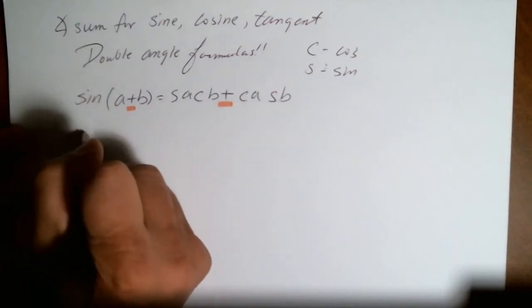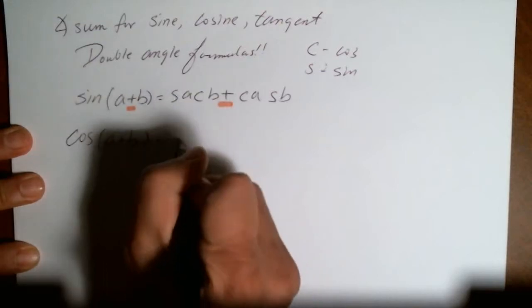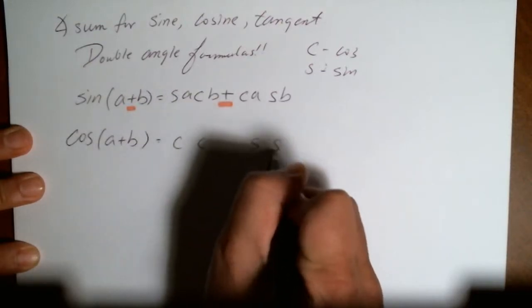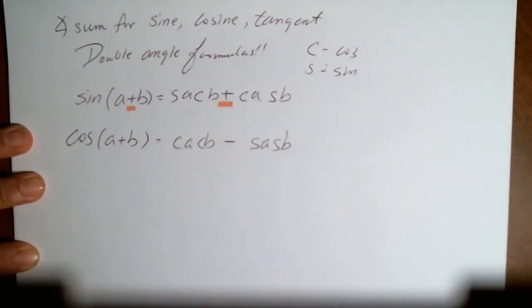The cosine now of the angle of A plus B, that is equal to cosine, cosine, cosine, sine, sine, sine, A, B, A, B, and change the sign. So let's do it again.